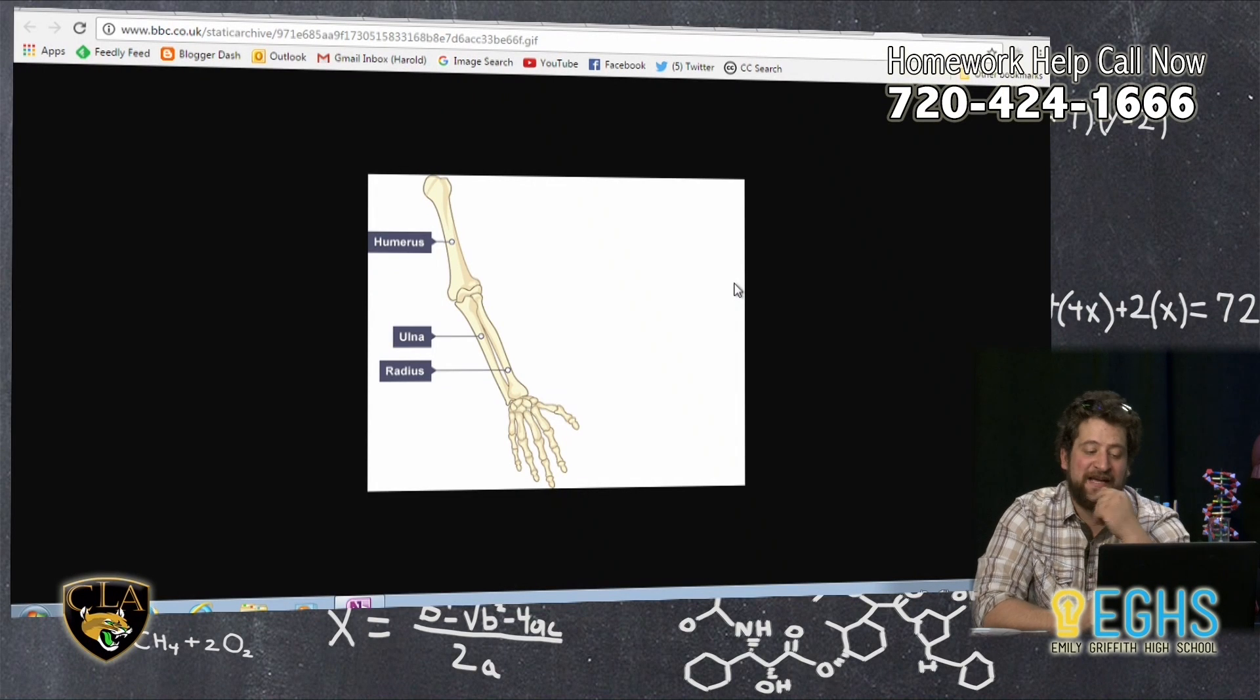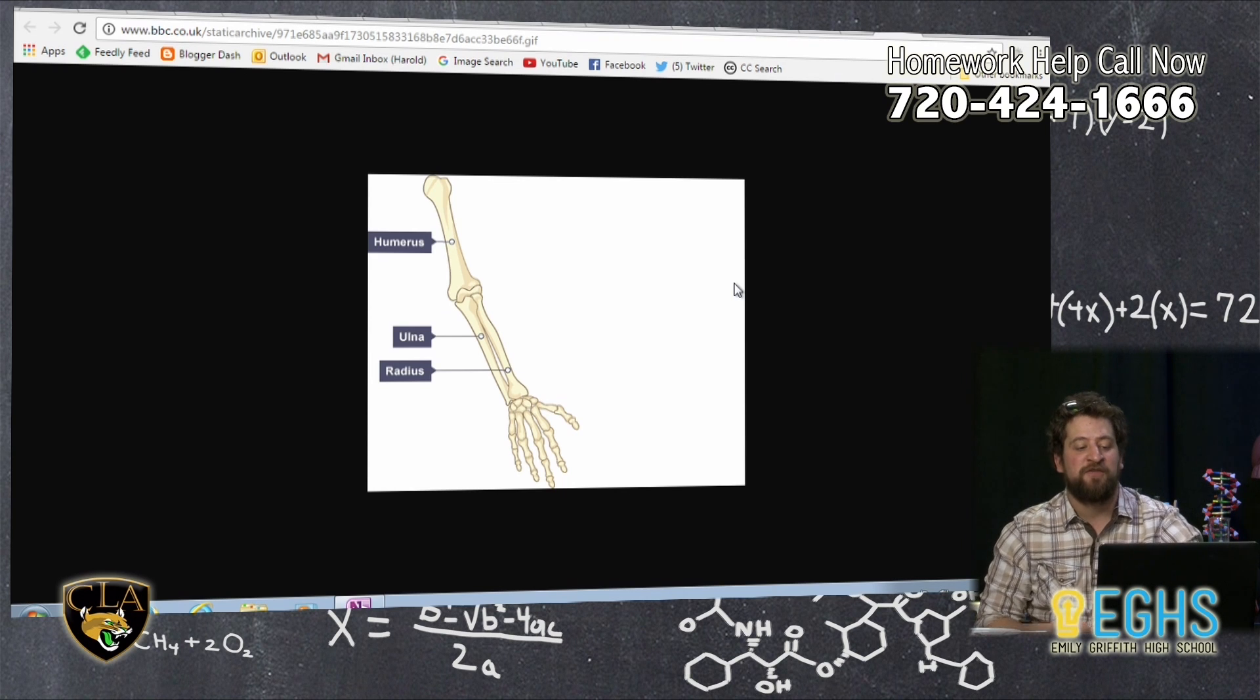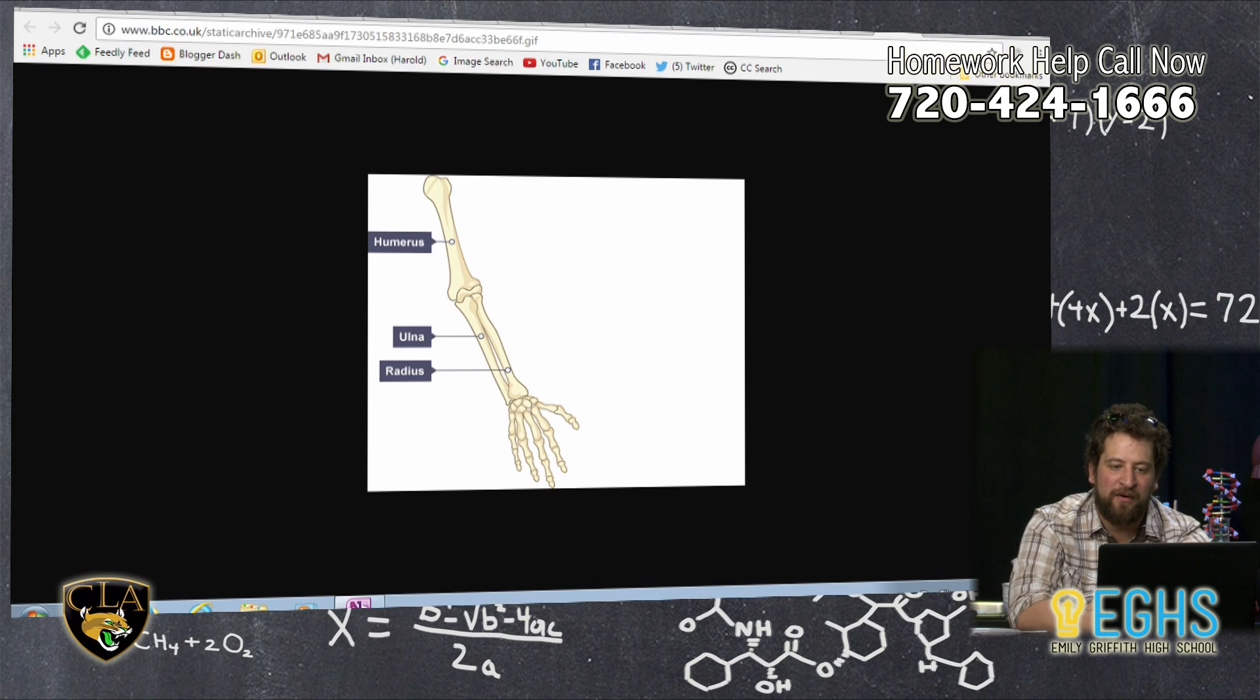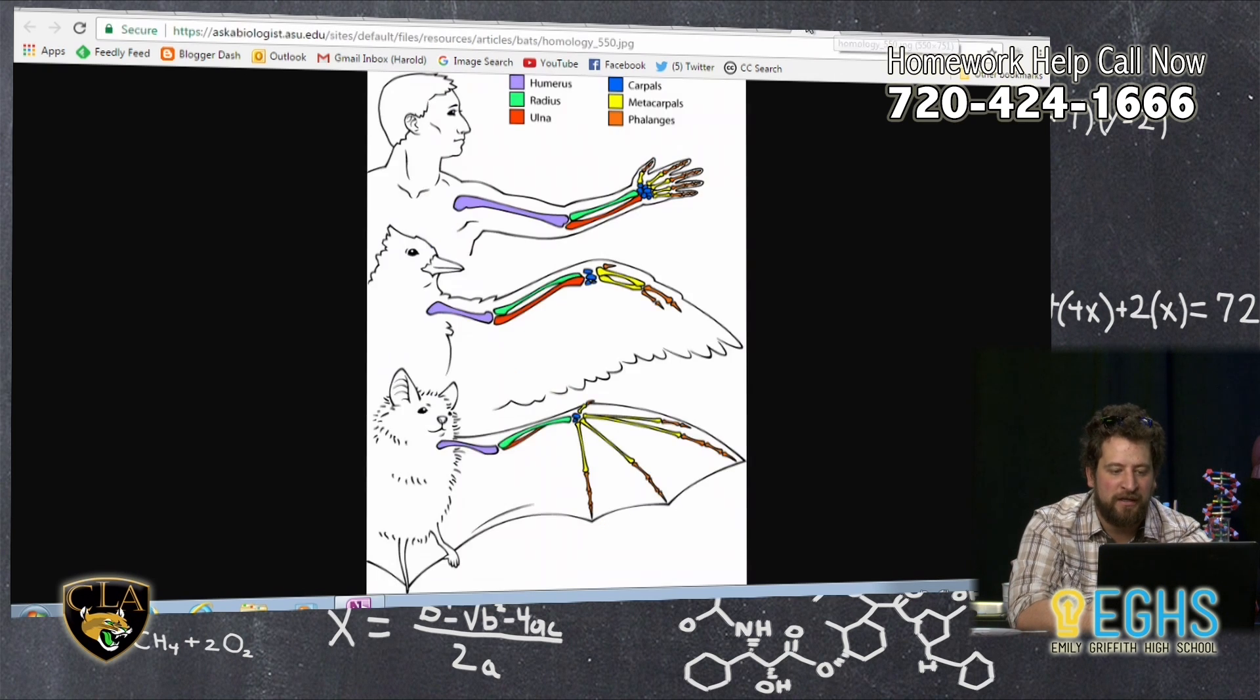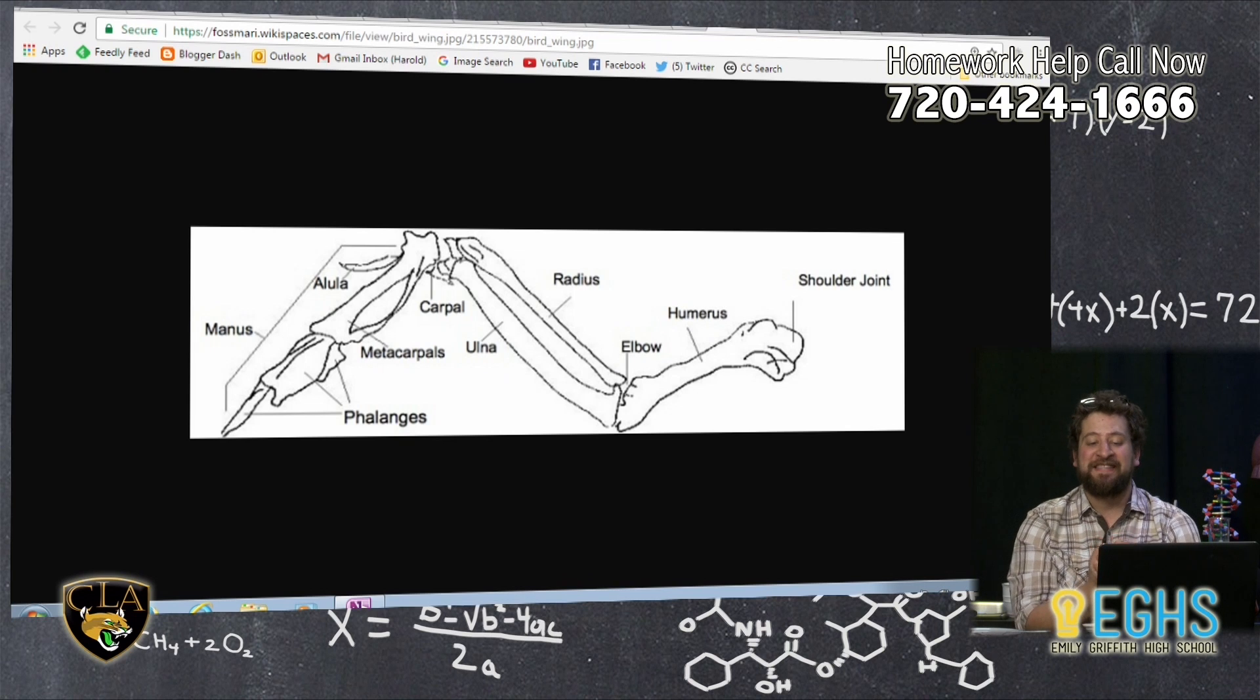If we can jump back to my screen, you can see that we've got the humerus bone, which is the upper arm bone, and then the lower arm is comprised of two bones, the ulna and the radius. And if we look at our bird arm, we can see that the bird arm actually has the same parts. So here's the humerus in the bird arm, it comprises the upper arm.